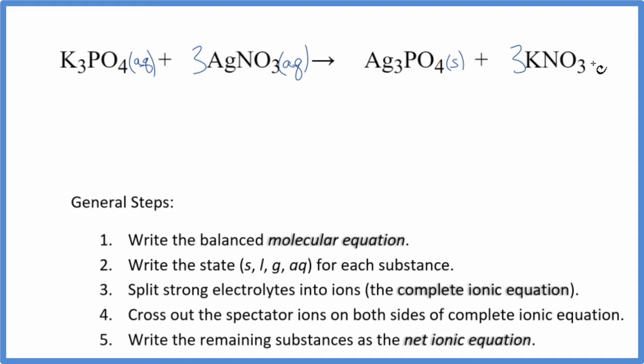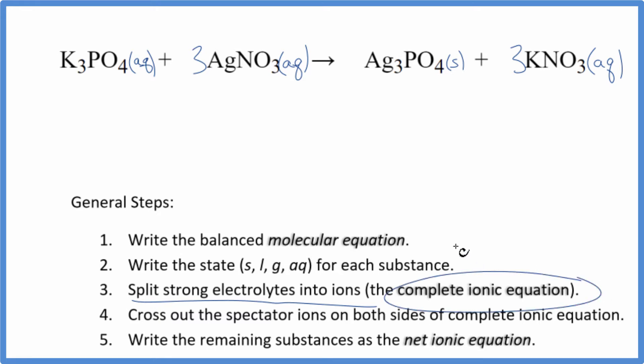And then nitrates are very soluble — aqueous. Now we can split the strong electrolytes into their ions. This gives us the complete ionic equation.